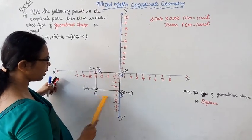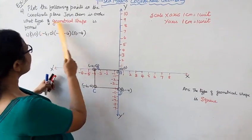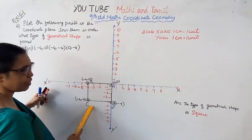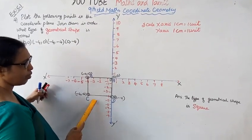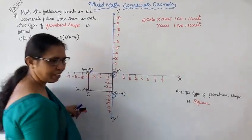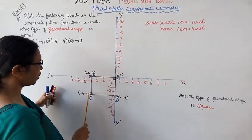Label them A, B, C, D. What type of geometrical shape? The shape is square. The type of geometrical shape is square.